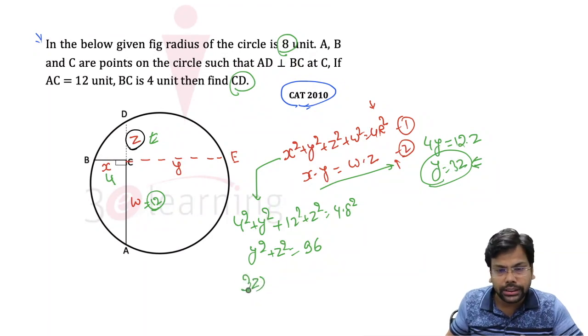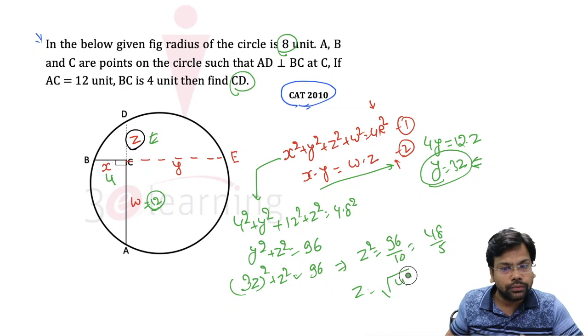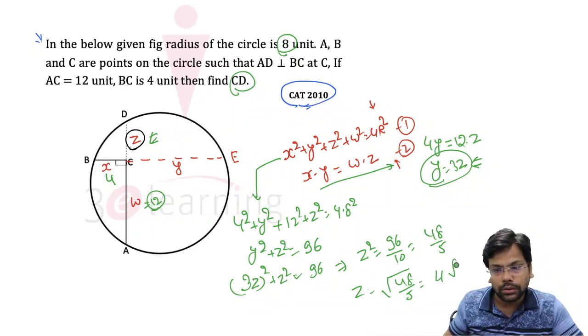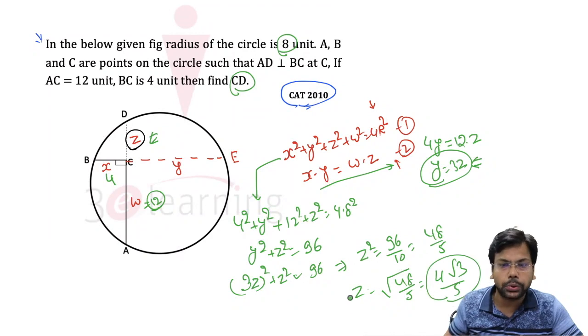We have nothing but 3Z square plus Z square equals 96. So we can say Z square is nothing but 96 divided by 10, or we can say 48 divided by 5. So Z is nothing but under root 48 divided by 5, or we can say 4 root 3 by 5. So the answer of this question is nothing but 4 root 3 by 5.